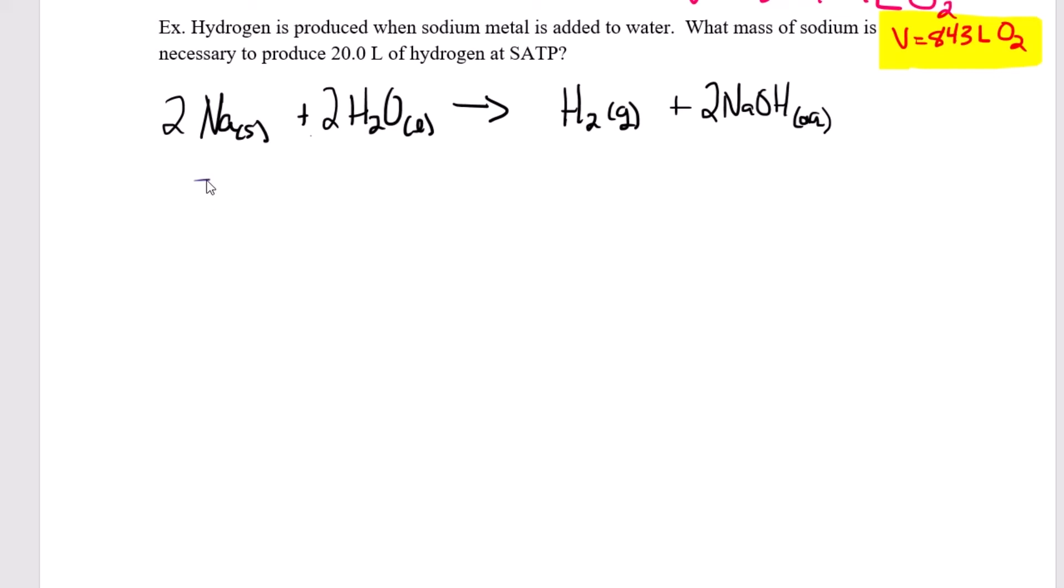So what are we looking for? We're looking for the mass of sodium, this is my unknown, necessary to produce 20 liters of hydrogen at SATP. So here my volume is 20 liters at SATP. So now I'm going to have to find my moles of hydrogen first. And this is a volume of a gas, so we'll have to use the ideal gas law for that first step. Then the molar ratio to find my moles of sodium. And that'll be step two. And then step three will be my molar mass formula.